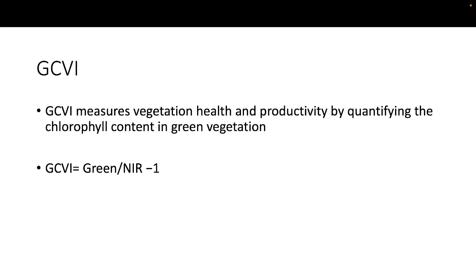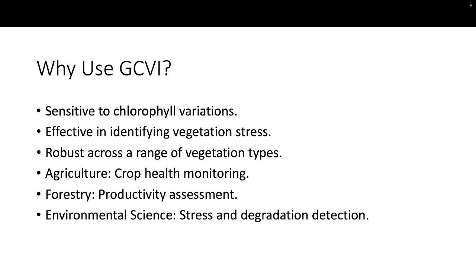You can use this with Landsat or Sentinel — both work in the same way. There are many uses in remote sensing because the Green Chlorophyll Vegetation Index is sensitive to chlorophyll variation, effective in identifying vegetation stress, and robust across a range of vegetation types. It is used in agriculture for crop health monitoring, forestry for productivity assessment, and environmental science for stress and degradation detection.